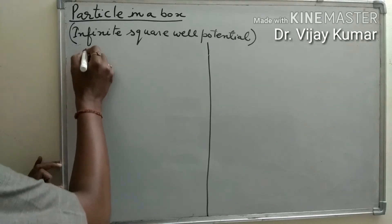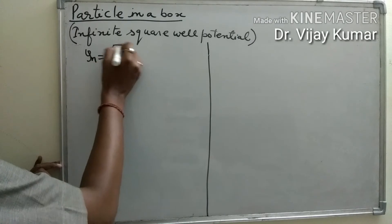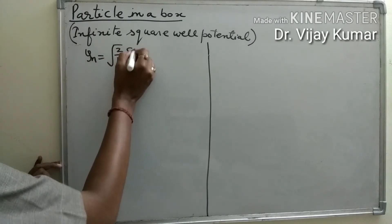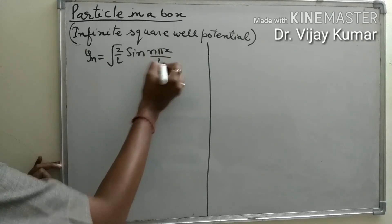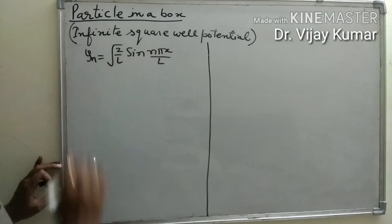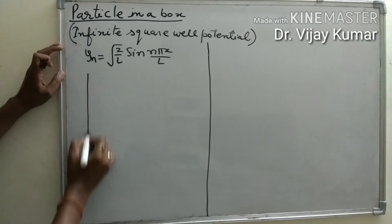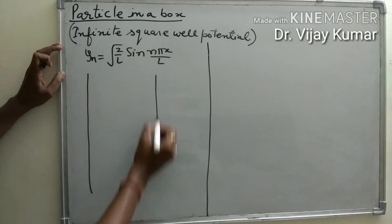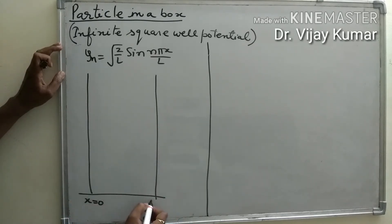The wave function is ψ = √(2/L) sin(nπx/L), which we derived in the previous video. The wave function may be positive or may be negative, and we can represent it inside the box — these are the walls of the box at x = 0 and x = L.